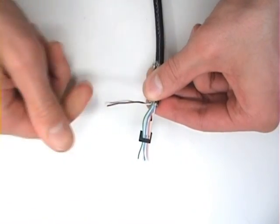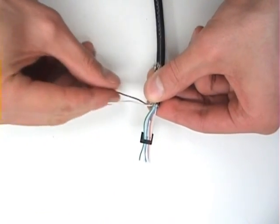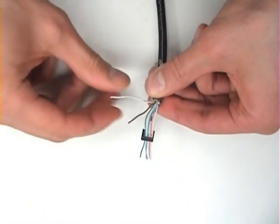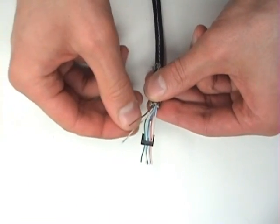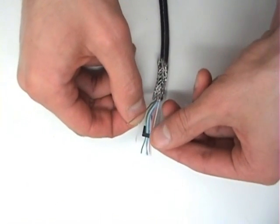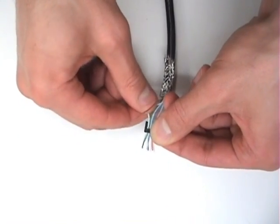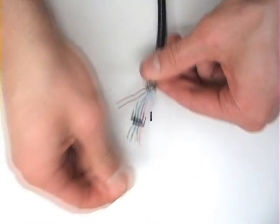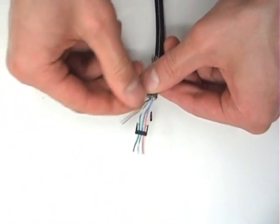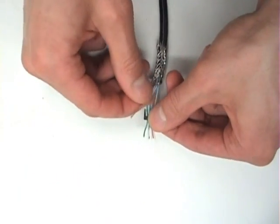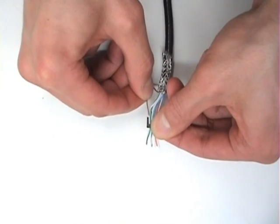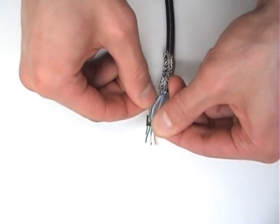Next, untwist the brown pair. And place the white wire in position number seven. And finally, place the solid brown wire in position number eight.